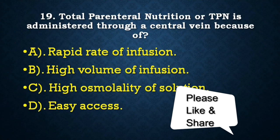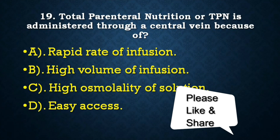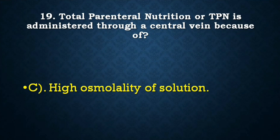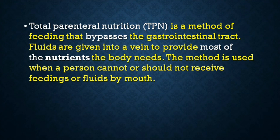Next question: Total parenteral nutrition (TPN) is administered through a central vein because of — rapid rate of infusion, high volume of infusion, high osmolality of solution, or easy access? Correct answer is high osmolality of solution. TPN is a method of feeding that bypasses the gastrointestinal tract; fluids are given into a vein when a person cannot or should not receive feedings by mouth.